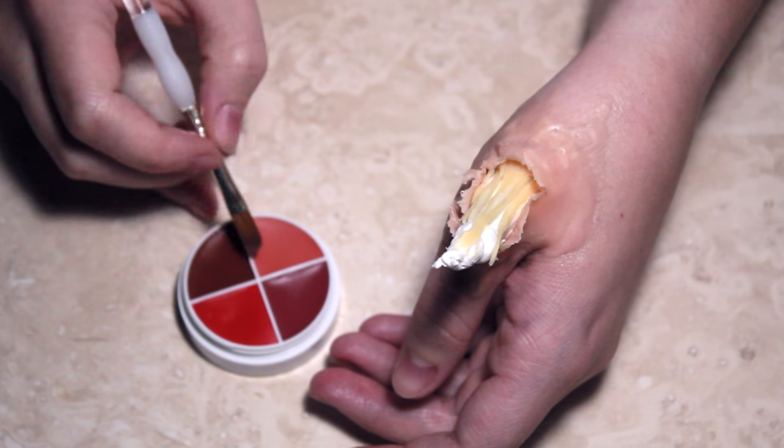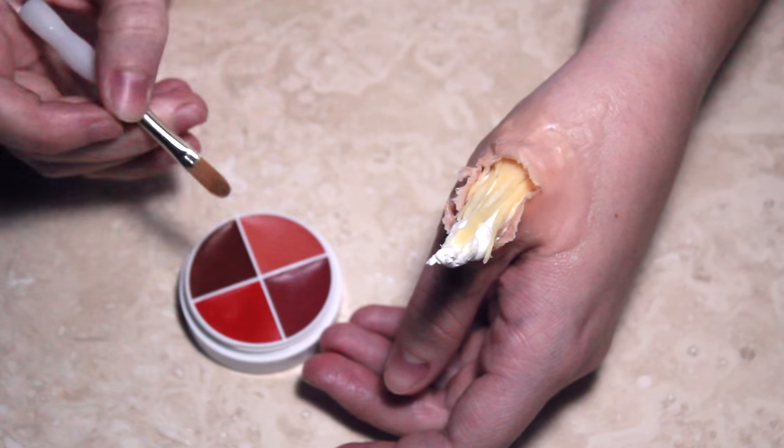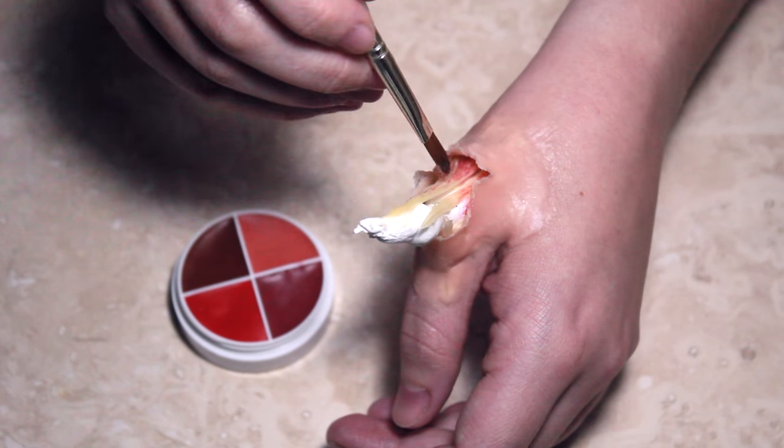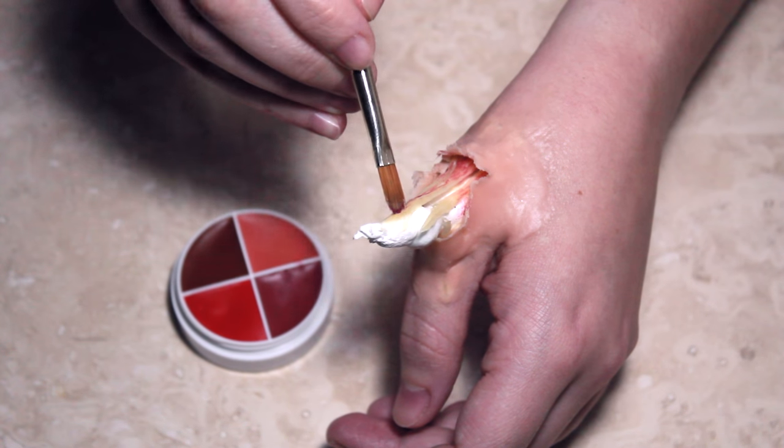Once you've blended out the edges it's time to go in with the color. I'm going to be using a blood wheel for this and I'm going to be using not quite the darkest red but the second darkest red and making sure that the inside of it is lined with this especially on the skin and then I'm going to run thin little lines right down the ligaments and tendons.